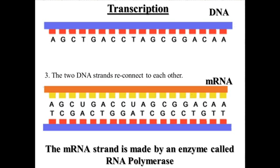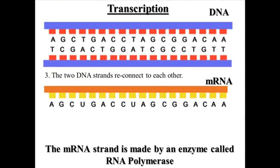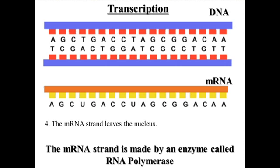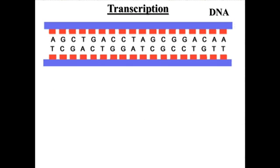The next step in this process is the two DNA strands reconnect to each other. We've made our messenger RNA strand, and now the final thing that happens is the messenger RNA strand leaves the nucleus and goes out into the cytoplasm of the cell. Once this is done, our transcription process is complete, and we are free to make another messenger RNA from the same place.